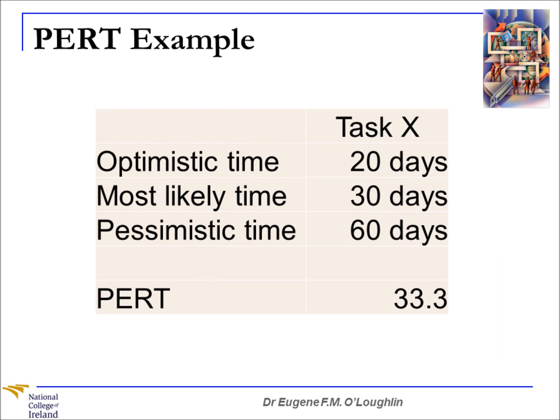In summary, if we take into account the optimistic, most likely, and pessimistic time using our PERT weighted average, the actual value we would use is not the most likely time, not the optimistic time, nor the pessimistic time — but 33.3 days in this particular example on our project schedule.